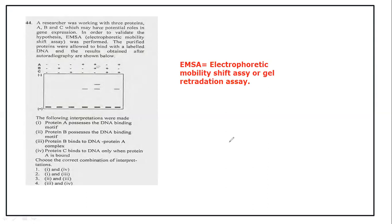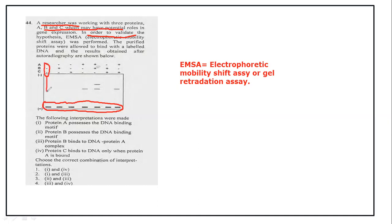A researcher was working with three proteins — A, B, and C — with their potential roles in gene expression. To validate the hypothesis, EMSA was performed. The purified proteins were allowed to bind with labeled DNA, and the results after autoradiography are shown. The control bands represent unbound DNA. There is also absence of any protein in the control lane.